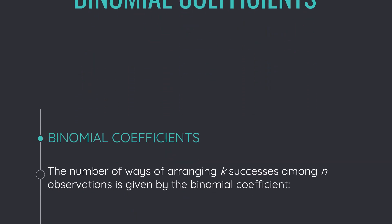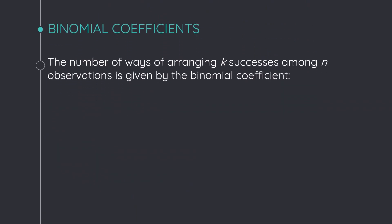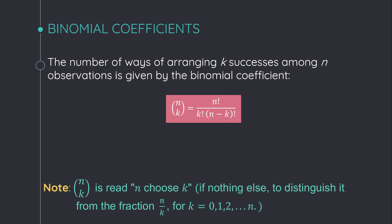Binomial coefficients: the number of ways of arranging k successes among n observations is given by the binomial coefficient n choose k. It is factorial n divided by factorial k times factorial (n minus k). Before I explain how to simplify this, let me give you some examples.